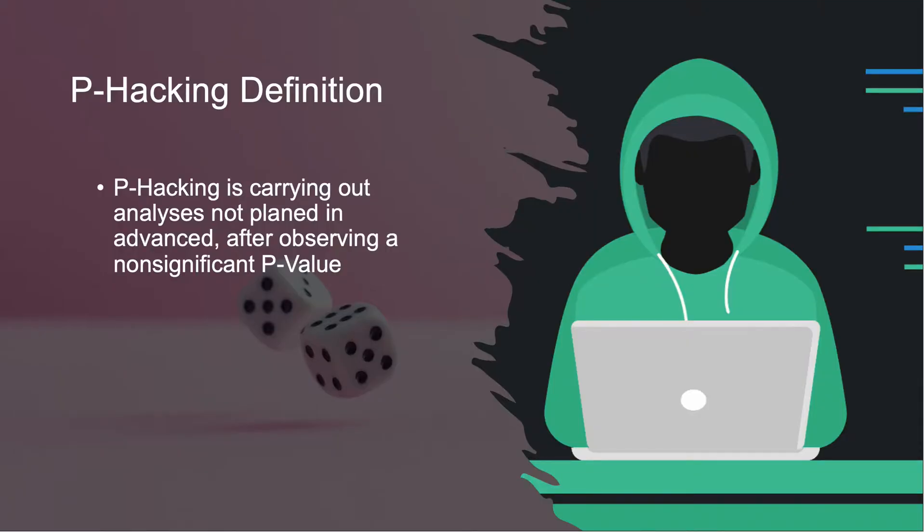P-hacking is carrying out analyses not planned in advance after observing a non-significant p-value with the purpose of uncovering a significant p-value. The problem with p-hacking is that you are increasing the likelihood of uncovering a significant p-value by chance alone when repeated unplanned analyses are conducted. These false discoveries increase the likelihood of committing a type one error where you wrongly reject a null hypothesis that is true.